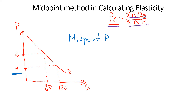The midpoint between 4 and 6 is going to be equal to 5. If the numbers are harder to work with, remember: to find the midpoint we add the two numbers together and divide by 2. We add 6 and 4 and divide by 2. We divide by 2 because we need to find the midpoint between two numbers — it's essentially an average of the two price points. So 10 divided by 2 equals 5. This is our midpoint.